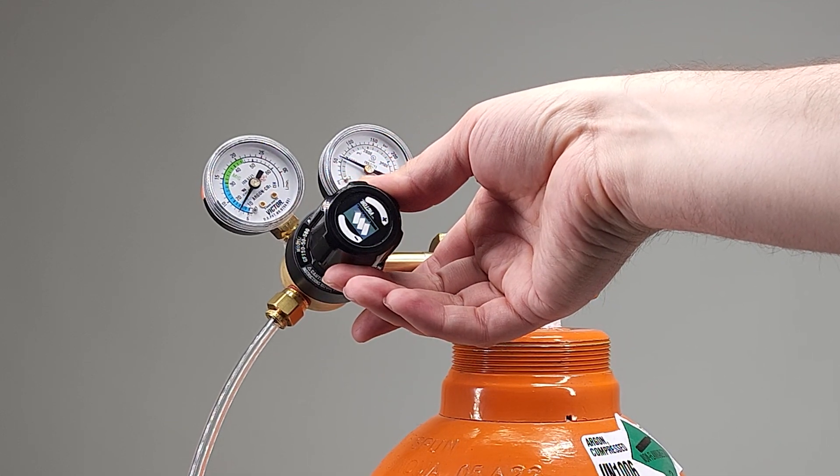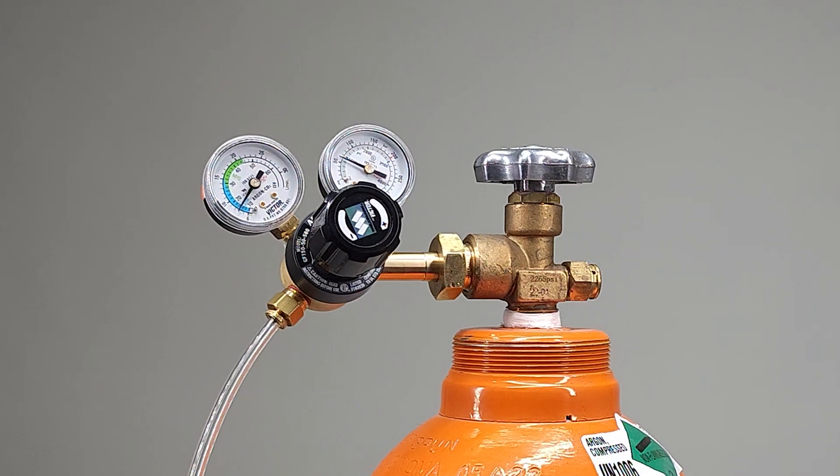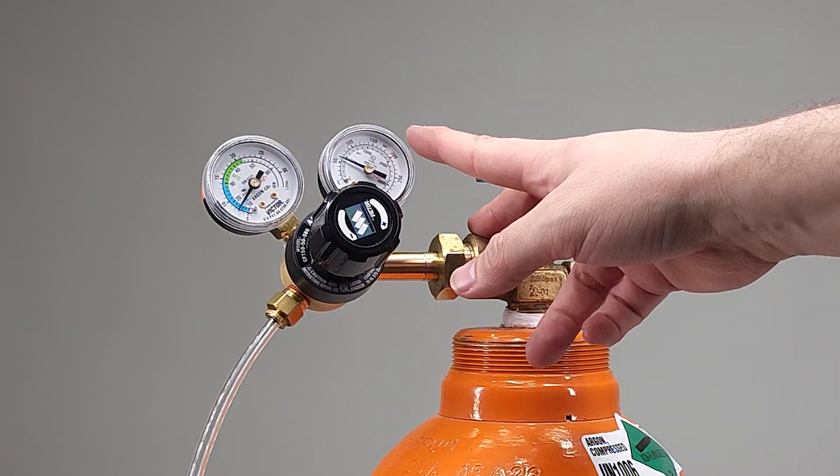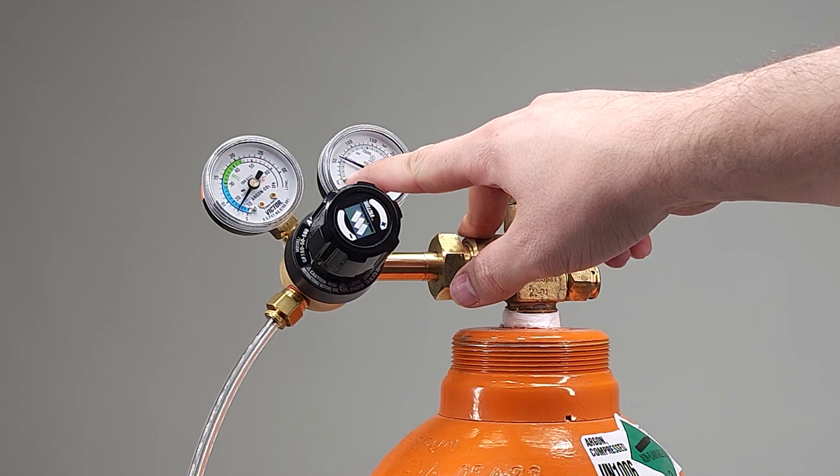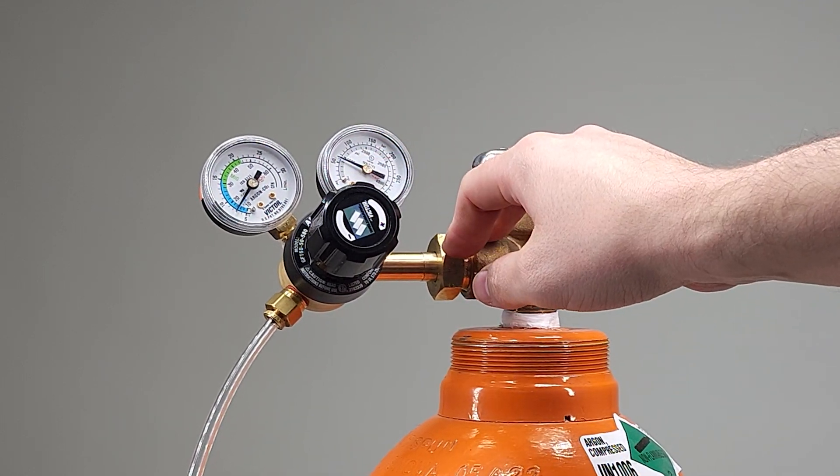Once that needle starts going down on the right gauge that'll show that our tank is getting lower and lower in pressure. Once it reaches the last hash mark you can start ordering your argon and that way you can take advantage of the full volume of your tank.